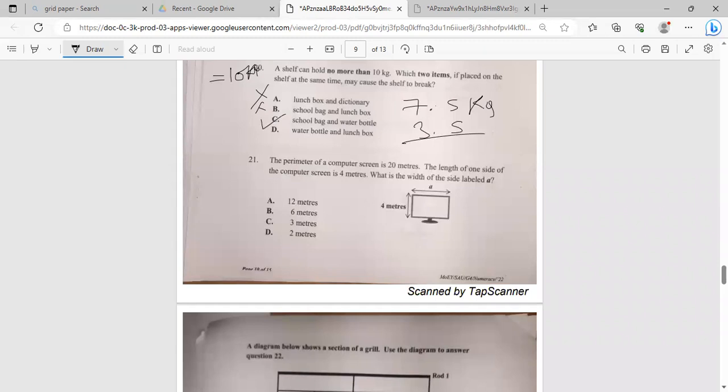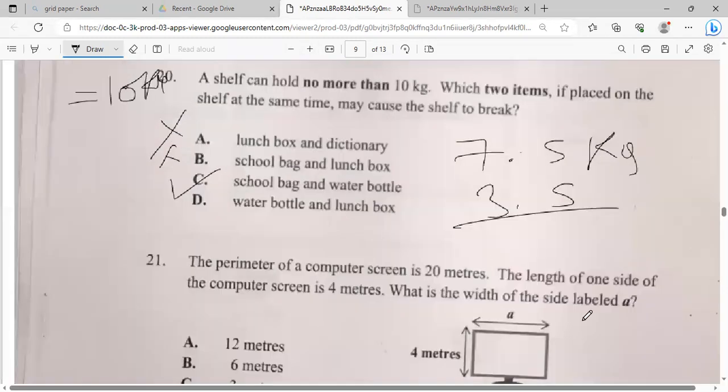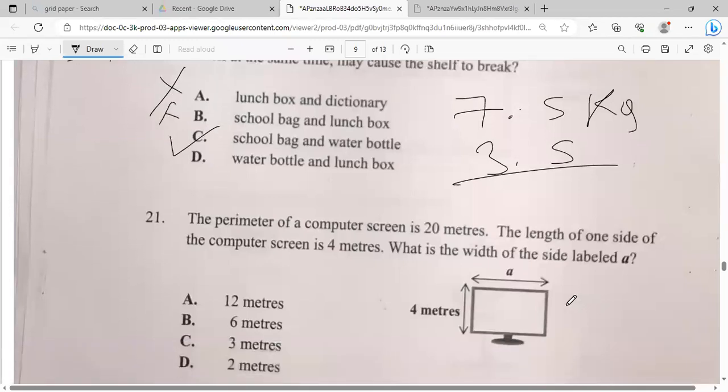The perimeter of a computer screen is 20 meters. The length of one side of the computer screen is 4 meters. What is the width of the other side? So it's basically a rectangle. So if one side is 4, the opposite side will also be 4. So if you add 4 and 4, that's 8. And we need to get to 20. So what plus 8 is equal to 20? It will be 12. However, this 12 should be split for this side and this side, because the opposite sides are equal. So since they are equal, we divide by 2. And that will give us 6. So our length for this other side would be 6 meters.